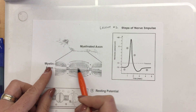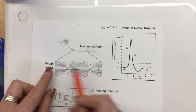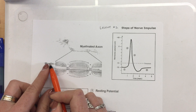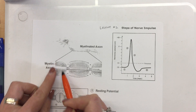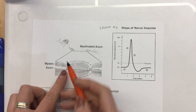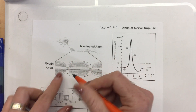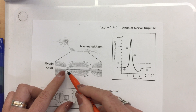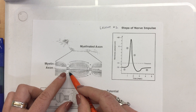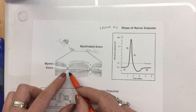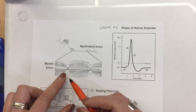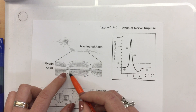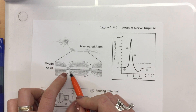Here's the axon labeled — like Crystal was saying, the myelin which makes up the Schwann cells. And then what are these gaps called again? Nodes of Ranvier. Yeah, it's like French — say Ranvier if it helps you with the spelling, but the nodes of Ranvier.